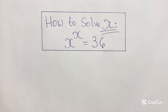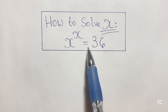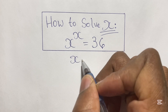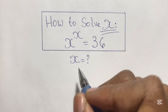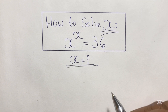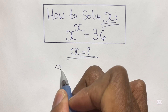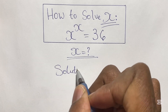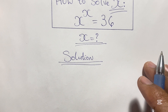Greetings again everyone, welcome back to my channel. Here we have another algebra exponential equation that we're going to solve. In this equation we have x to the power of x is equal to 36, and we are given to find the value of x. This looks like a very fun one to do. You may feel free to pause this video and see if you can do this by yourself. You may also check out my math olympiad playlist or my Lambert W function playlist to see how to solve equations like these.